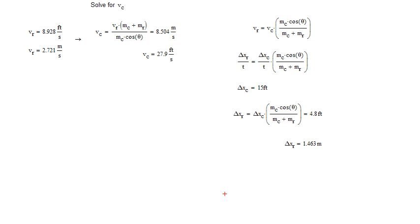If you have any questions about it, comment underneath the video, and I'll put a note in it. I just want to recap all the final answers here. The velocities of the ramp in English and metric, 8.92 feet per second and 2.7 meters per second. The ramp moves 4.8 feet, or 1.463 meters.